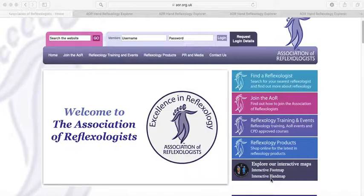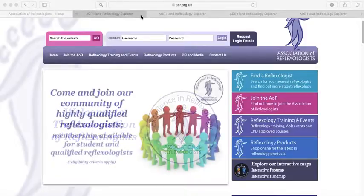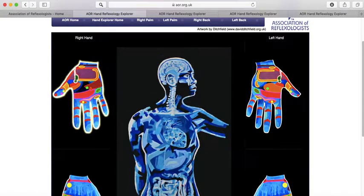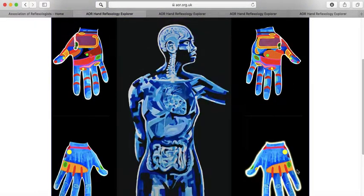So I'm just going to show you when you click on this, this other screen appears where you can see the palms of the hands and the back of the hand, the dorsal side.